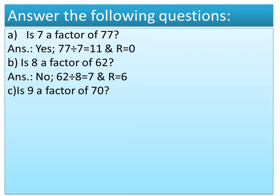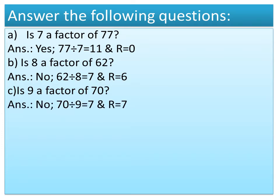Question C: Is 9 a factor of 70? The answer is no, because if we divide 70 by 9, then quotient equals 7 and remainder is also equal to 7. If the remainder is not equal to 0, we can say that 9 is not a factor of 70.